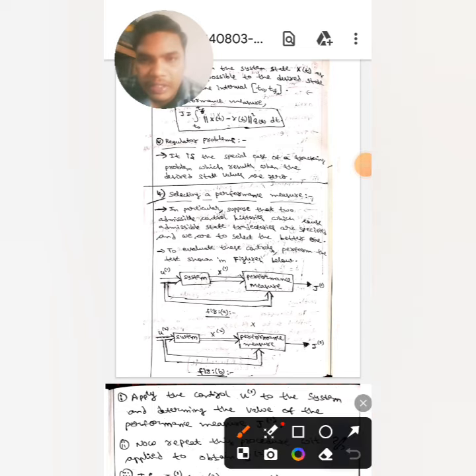Hello guys, so hope we are all fine. Today we are here to discuss selecting a performance measure. In particular, suppose that two admissible control histories which cause admissible state trajectories are specified, and we should select the better one. In order to evaluate these controls, we should perform the test shown in the figure.